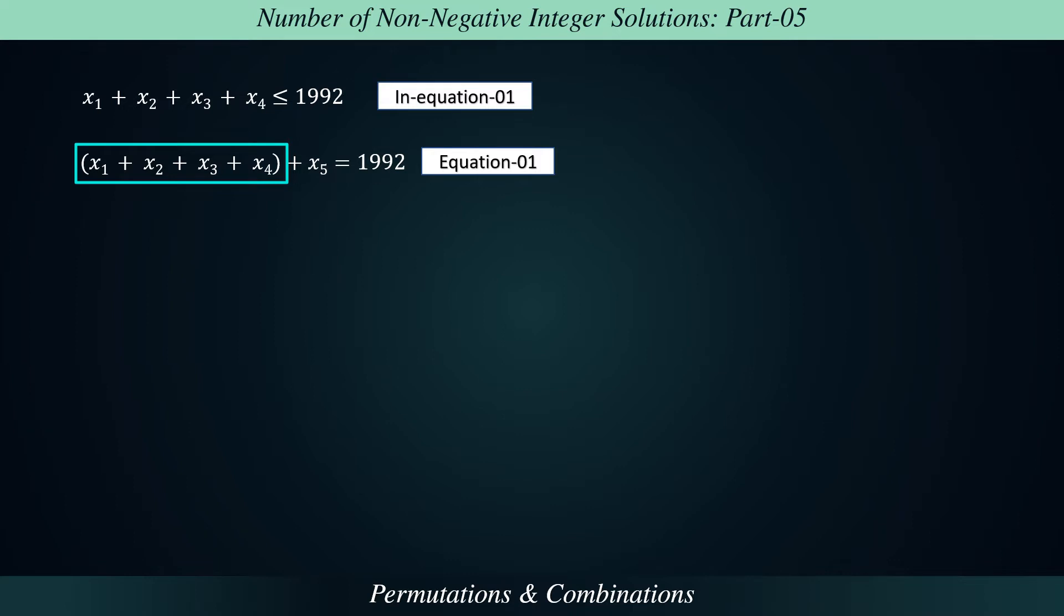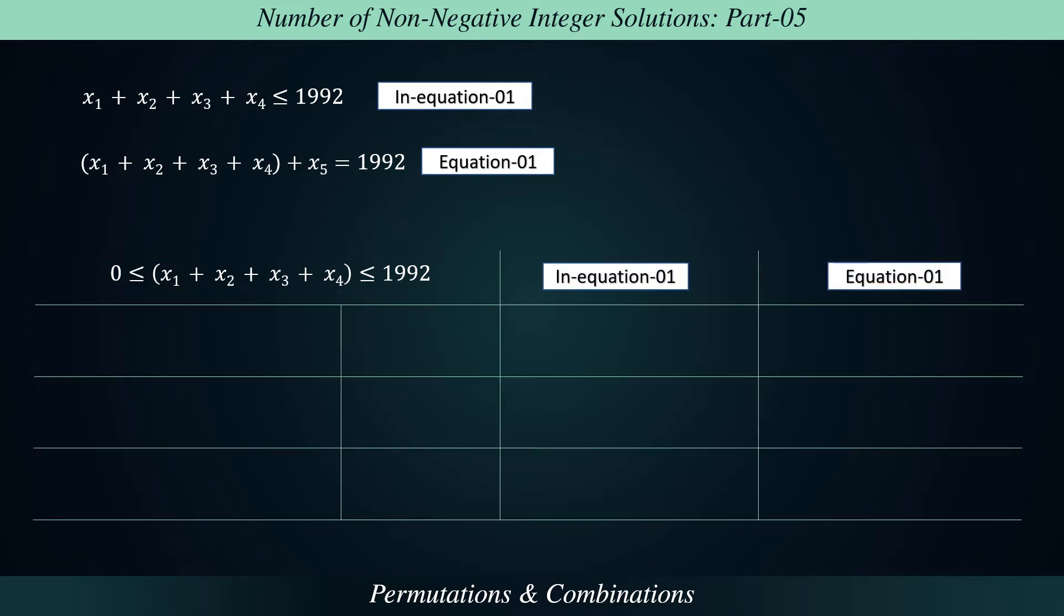Suppose the sum of x1 to x4 equals 0 and x5 equals 1,992. In this case, in-equation 1 and equation 1 both are true. Similarly, both are true for two other cases tabulated here.